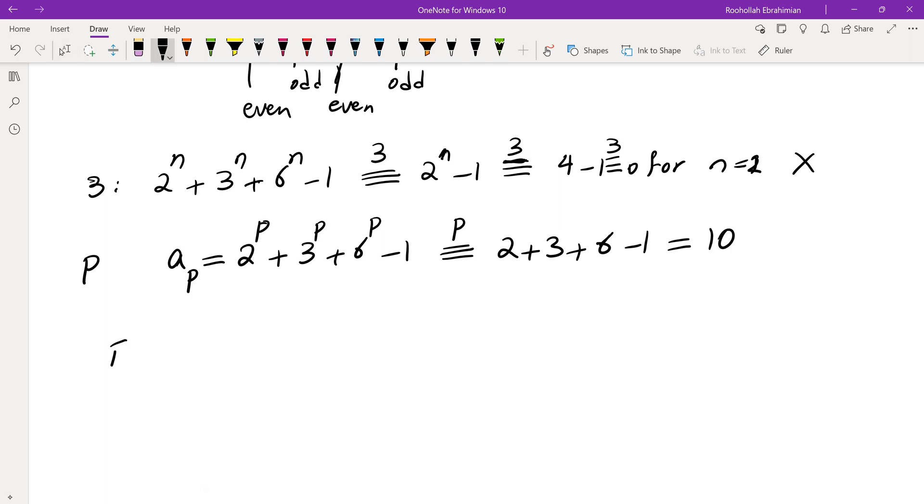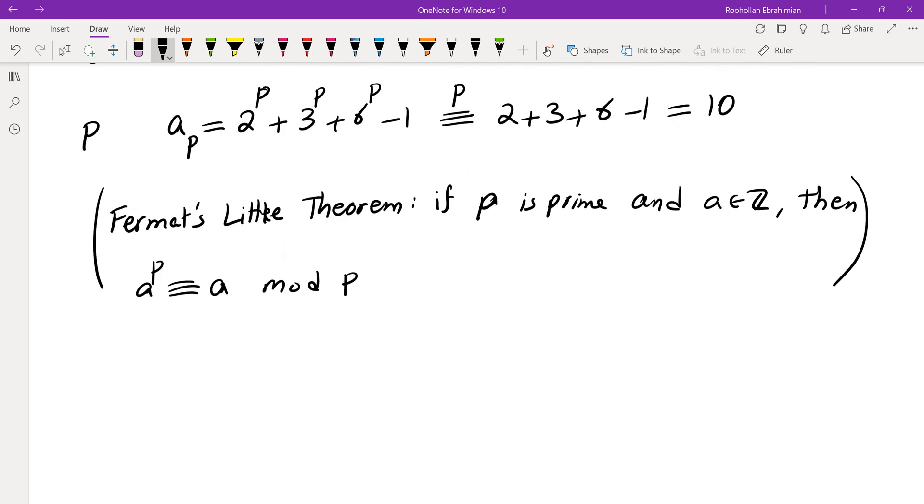And just to remind you, Fermat's little theorem tells us that if p is prime and a is an integer, then a^p is congruent to a mod p. Okay, so that didn't quite work. It eliminated the possibility of p equals 5 but nothing really else.